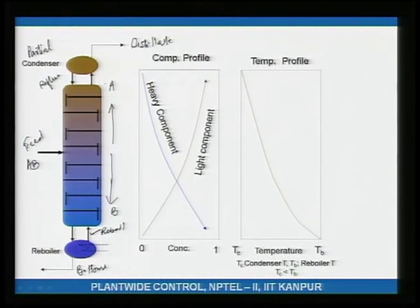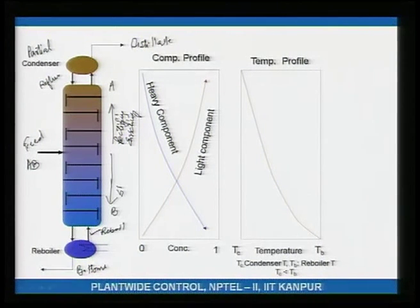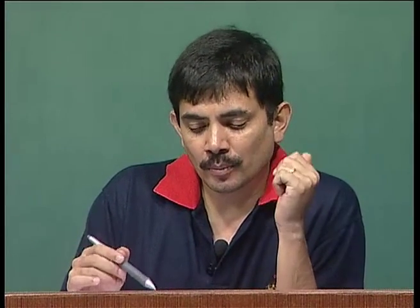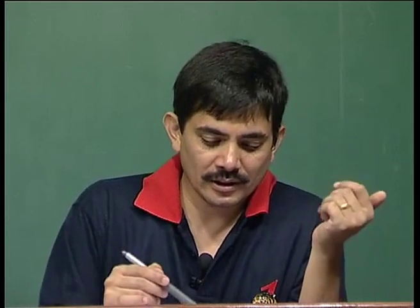From the perspective of the more volatile component A, the section above the feed is called the rectifying or enriching section, and below the feed is called the stripping section. The trays above the feed are getting enriched in A as you go up — hence the name enriching section.